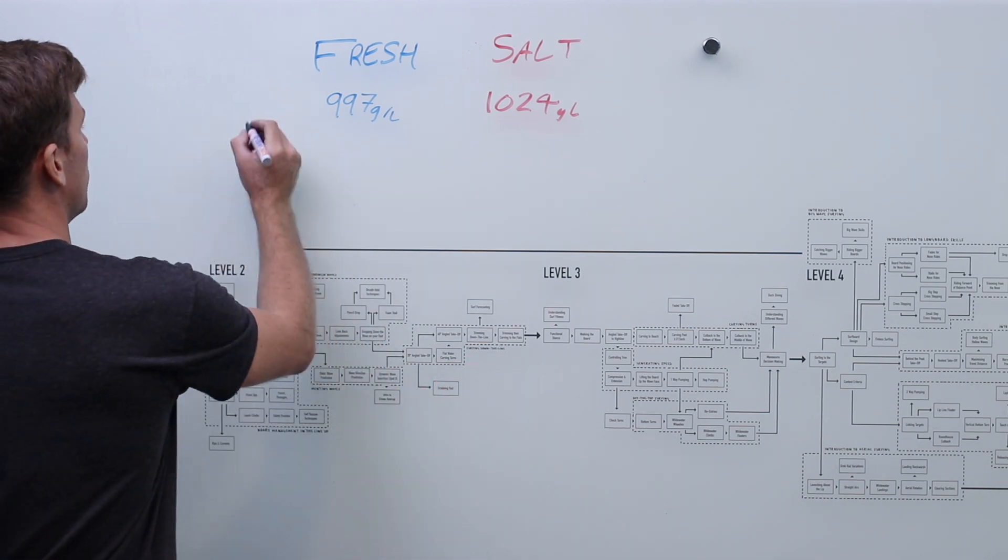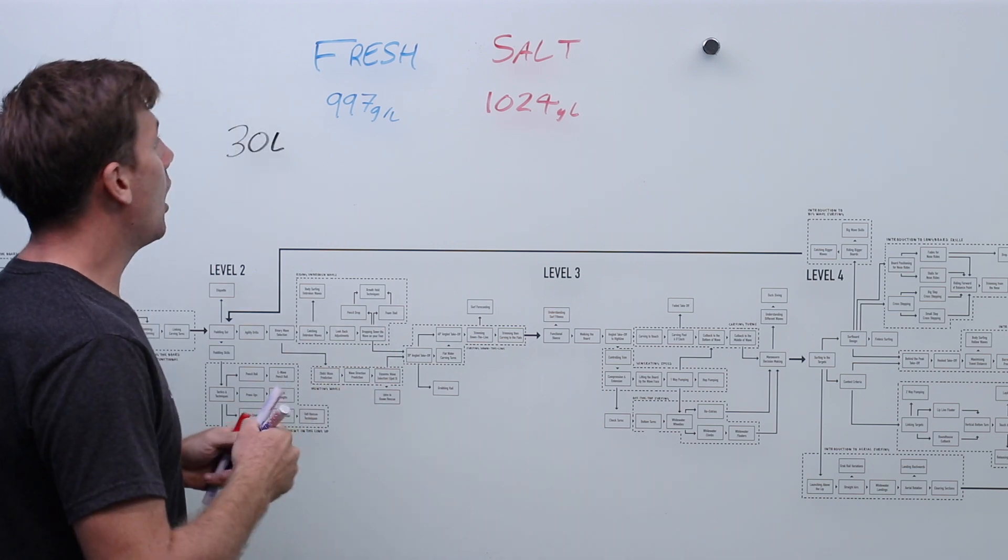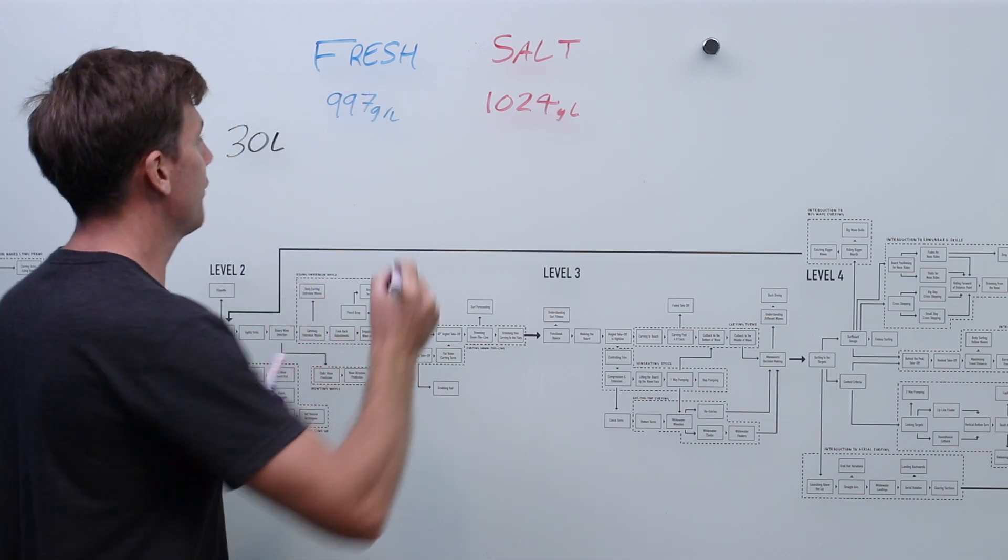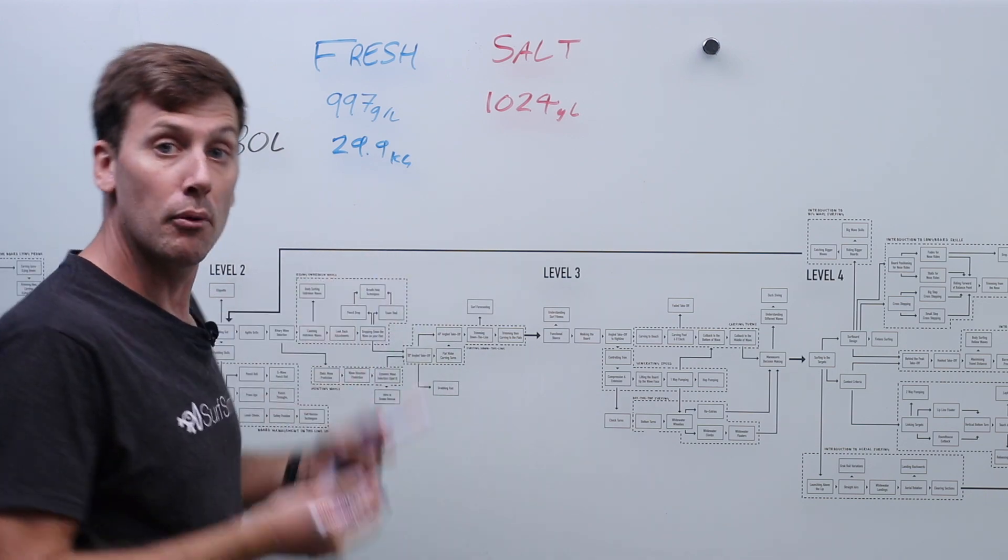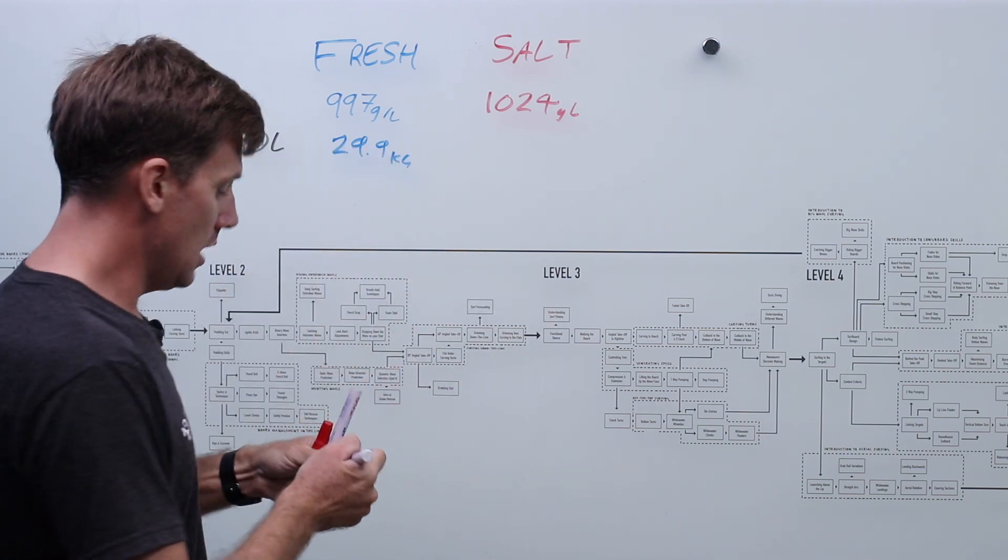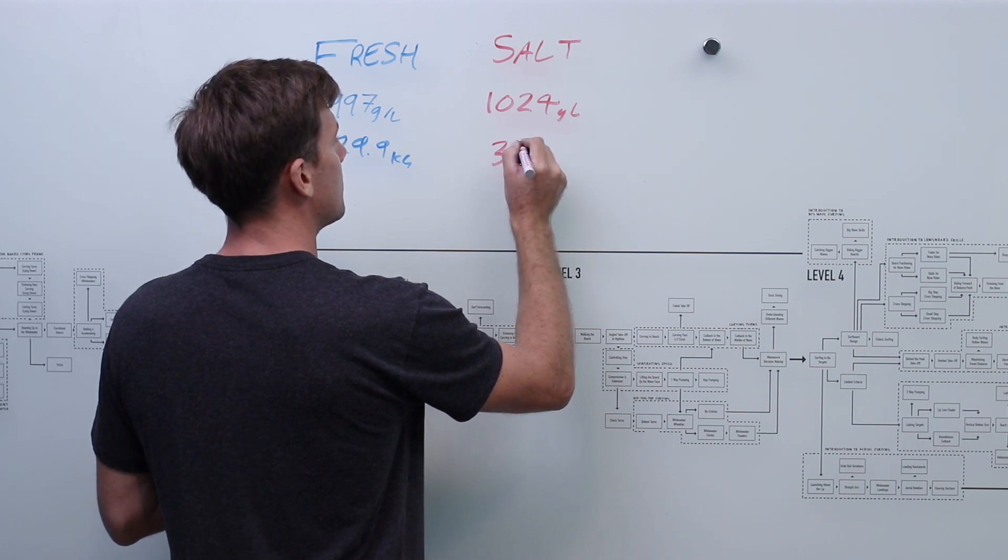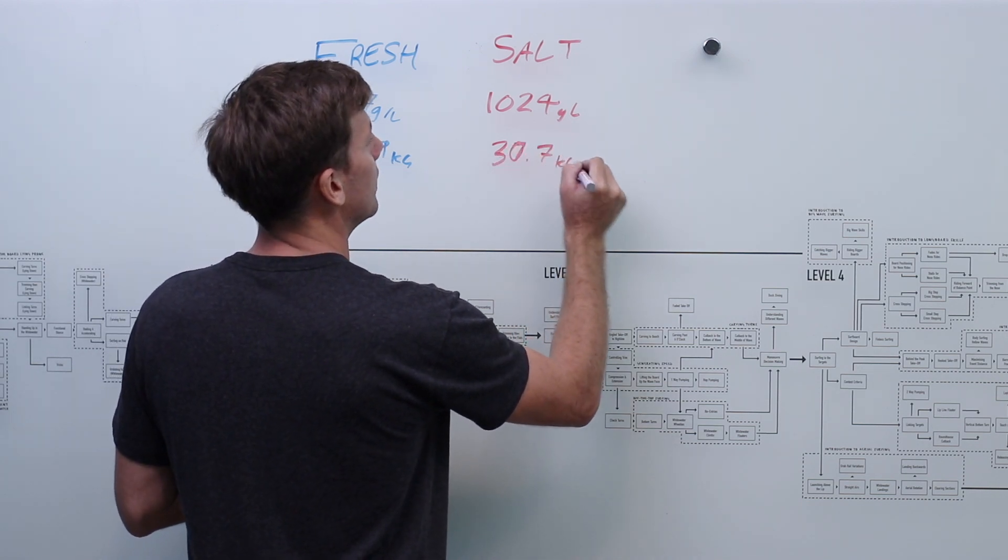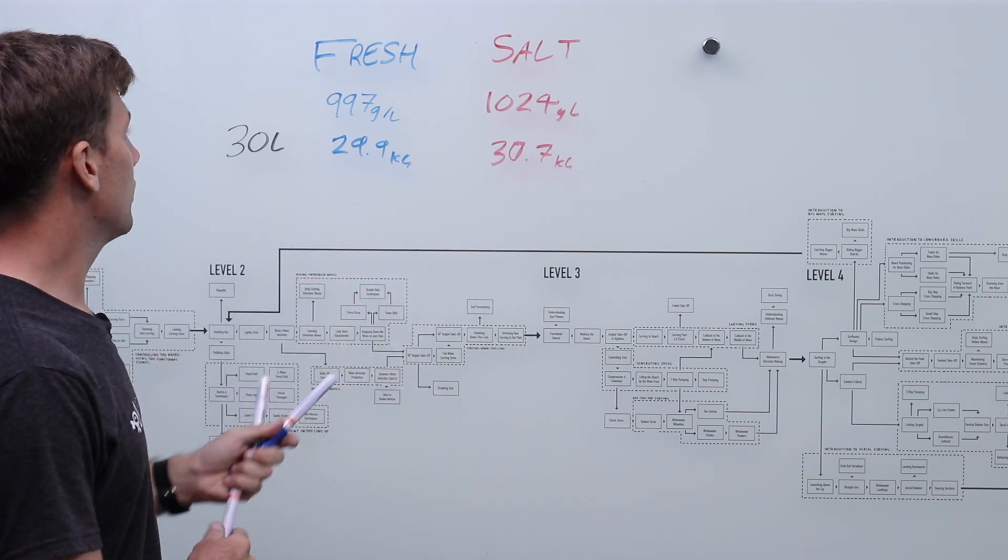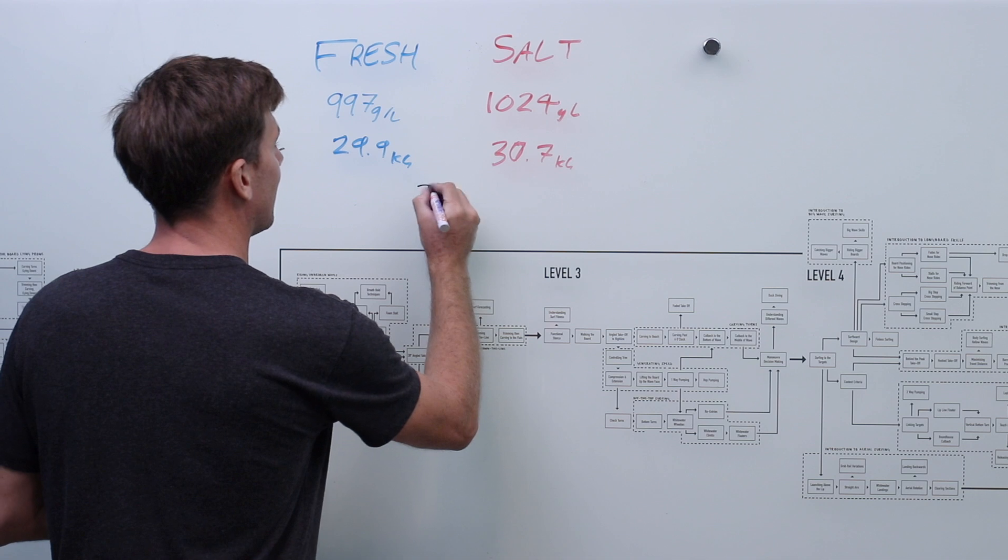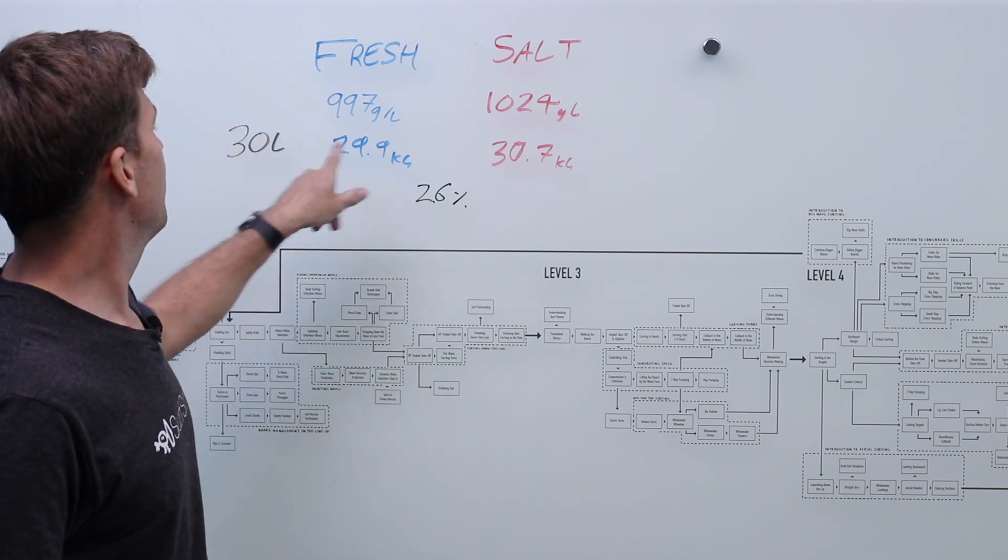So there's our weight of water. Now let's think about when we put our surfboard in. Let's take a 30 litre surfboard. We drop it in the water and our fresh water, the displaced weight of that fresh water is going to be 29.9 kilograms and that's going to produce an upward buoyant force of 29.9 newtons. Our salt water, the same board dropped into salt water is going to produce 30.7 kilograms of displaced water. So that is a difference. It's about a 2.6 percent difference.